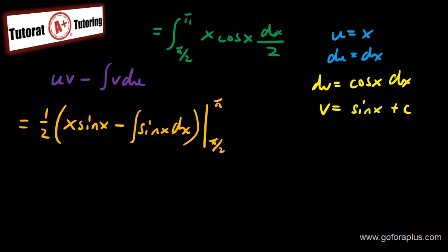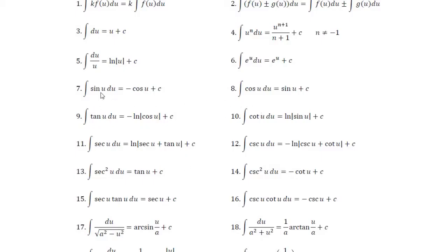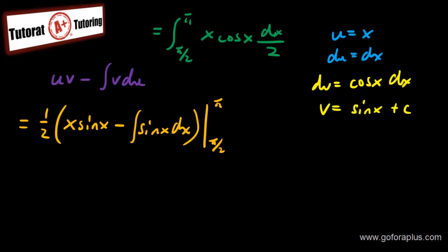Now, integral of sine of x is minus cos of x. So this is going to be one half, I'll use square bracket, x sine of x minus cos of x, which is plus cos of x from pi over 2 to pi. So now you plug in the values. If you plug in values, it will give you pi sine of pi plus cos pi, subtract, plug in with pi over 2.